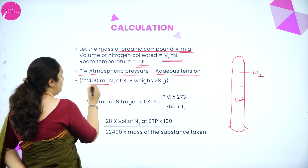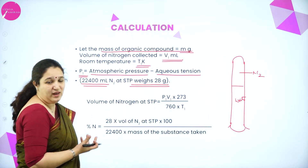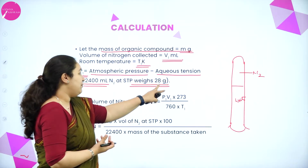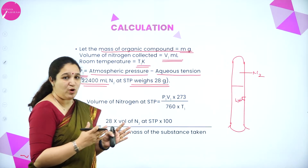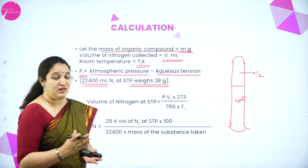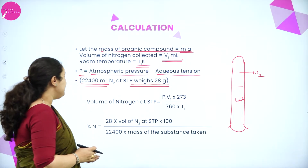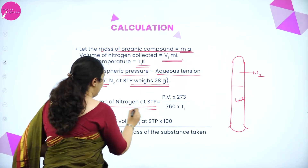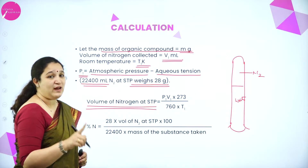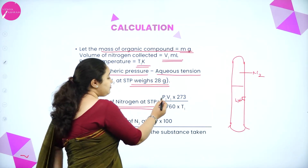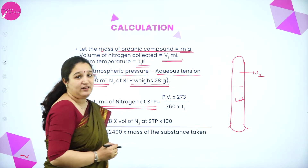We know that 22,400 ml of nitrogen at STP weighs 28 grams — that is the molar volume at one atmospheric pressure. So to calculate the volume of nitrogen at STP, the formula is: V_STP = P1 × V1 × 273 divided by 760 × T1. Here P1 is the actual pressure, V1 is the collected volume, 273 is the standard temperature, 760 is the standard pressure, and T1 is the room temperature.